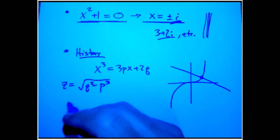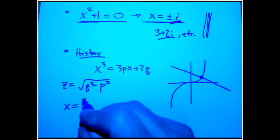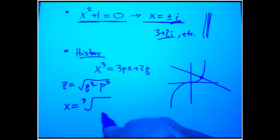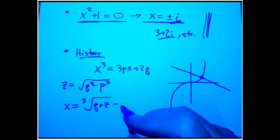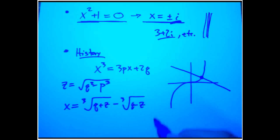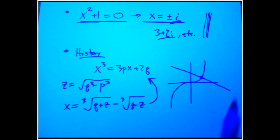It turns out that if you let x equal the cube root of q plus z minus the cube root of q minus z, then it solves that equation. And you can verify that - just cube this out and foil it out carefully and you get some wonderful cancellations and it works.